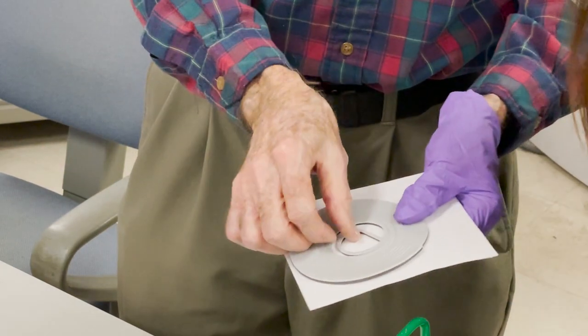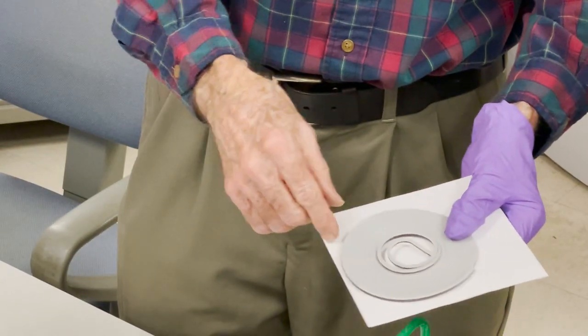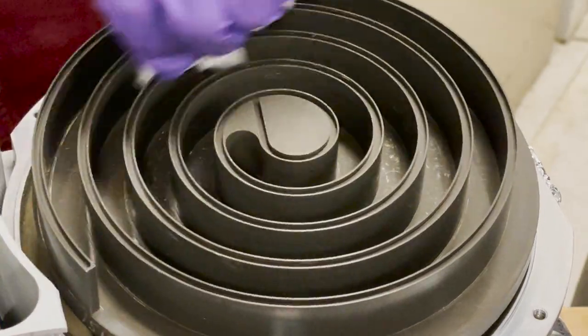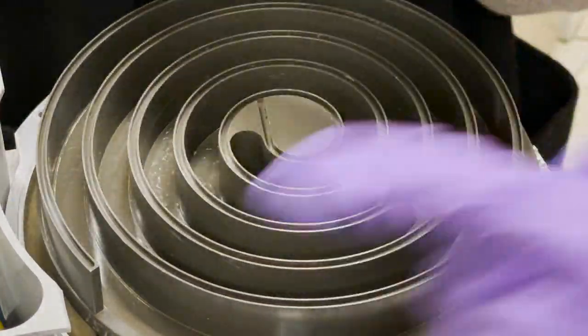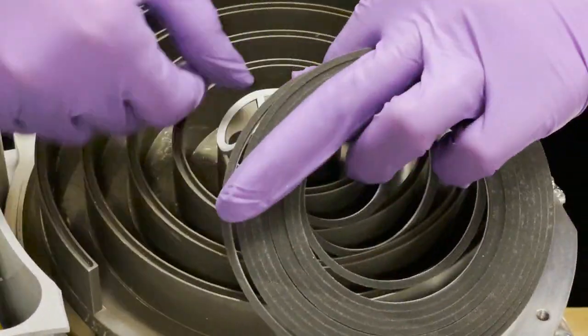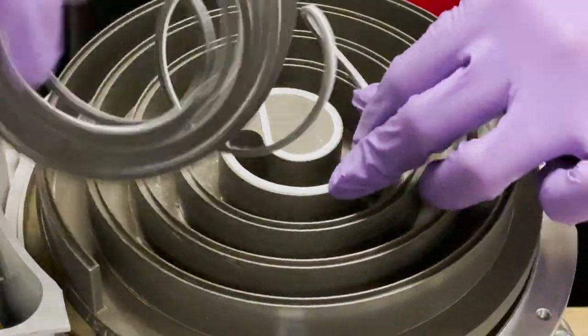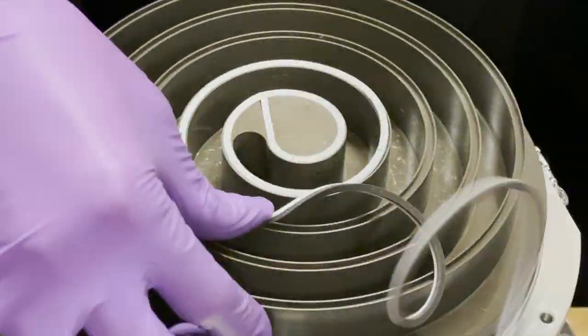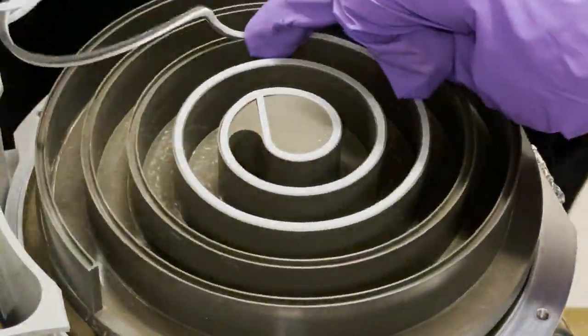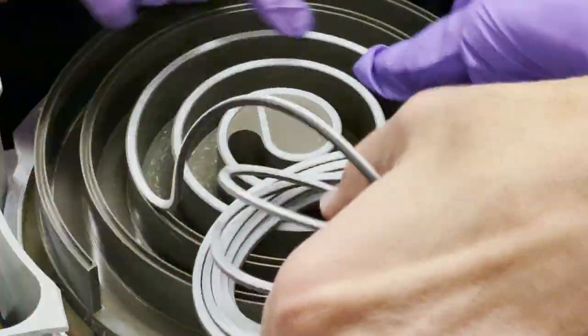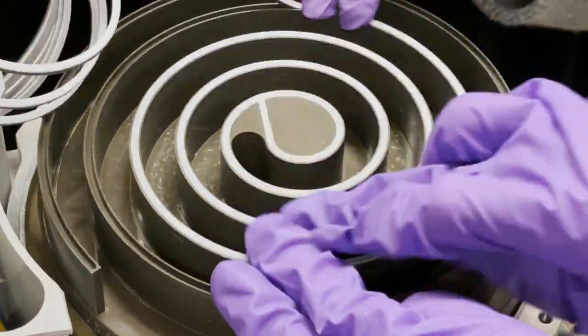And now we have the tip seal which has this hook at the end. And then it's a continuous strand. So you have to start with this one. You see it's configured to match that. The idea is that you press this down in and work it around. As you go, making sure it's all nice and tight within that groove.